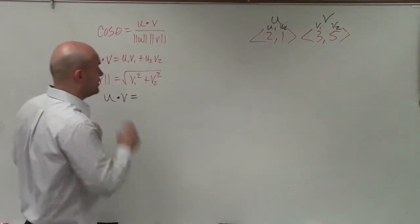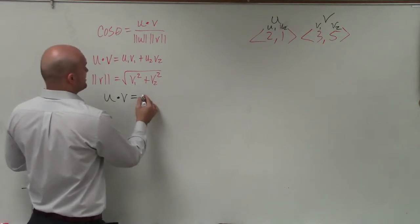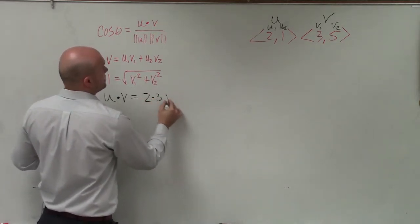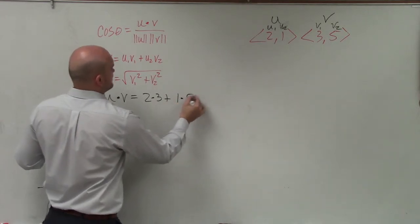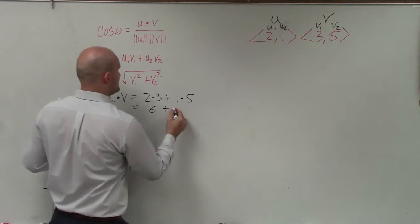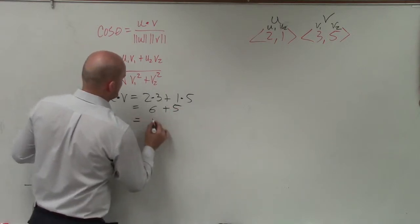So now let's go ahead and determine the dot product, which is going to be 2 times 3 plus 1 times 5. 2 times 3 is 6 plus 1 times 5 is 5 equals 11.